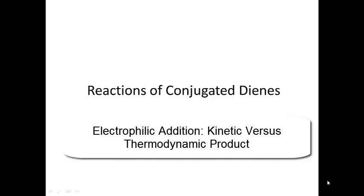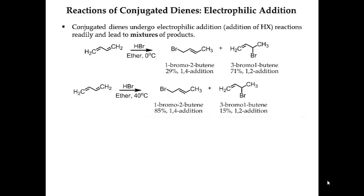This video is going to focus on two reactions: electrophilic addition and the Diels-Alder cycloaddition. If we look at this conjugated diene, one of the reactions that conjugated dienes can undergo is electrophilic addition. It's the exact same reaction we saw in Organic 1, however it's a little bit different in that you can get a mixture of products.